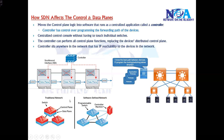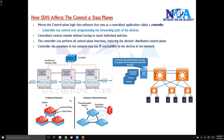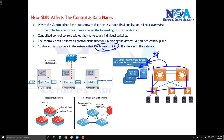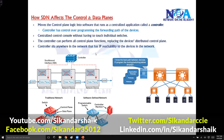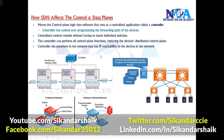The controller can sit anywhere in the network — it can be present anywhere as long as your networking devices and the controller have IP reachability. You need to make sure your networking devices have IP reachability; if there is no IP reachability, the networking devices may not be able to reach the controller, and the controller may not be able to instruct the devices on how to forward. So the controller can be anywhere as long as reachability is ensured.